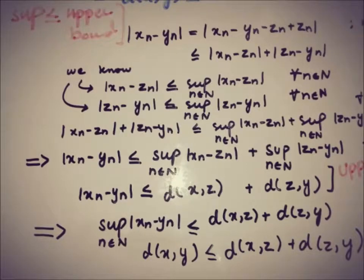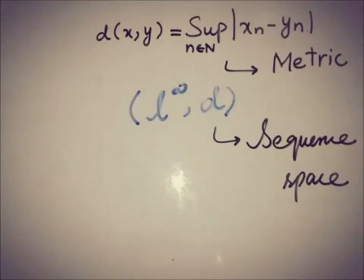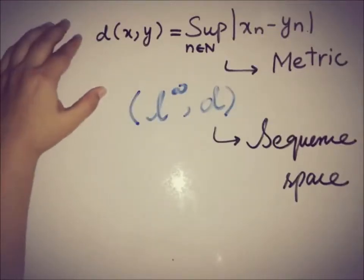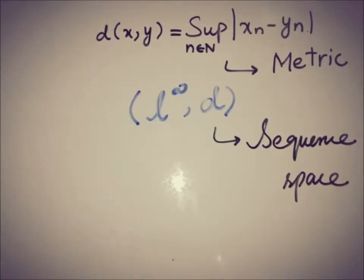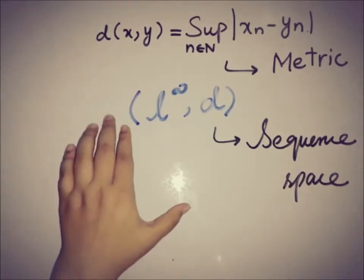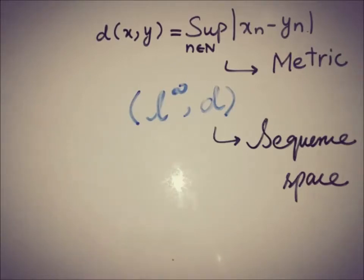So we have proved that the function d(x,y) defined on the bounded sequences is really a metric. Finally, we have proved that d is a metric on the sequence space, so (L∞, d) is a metric space of the sequence space.